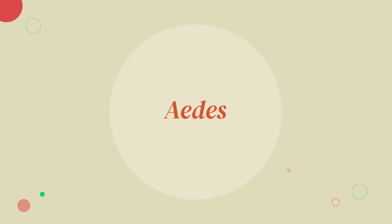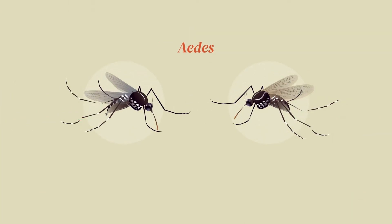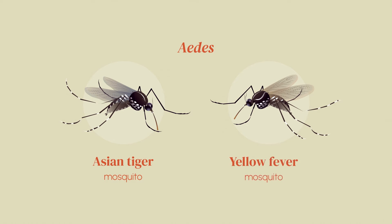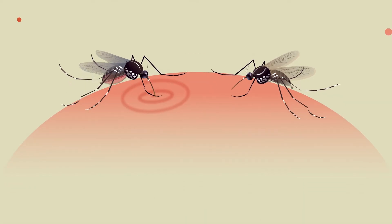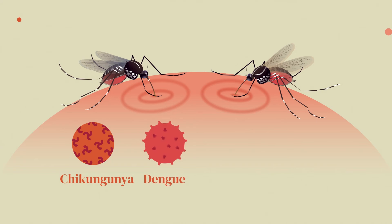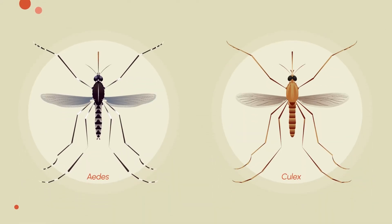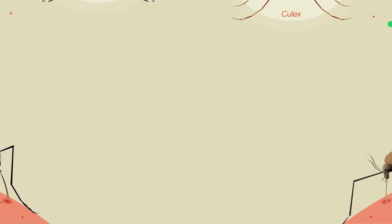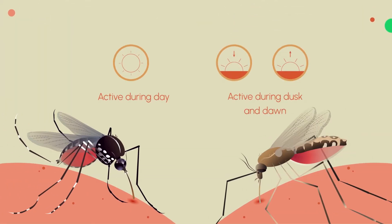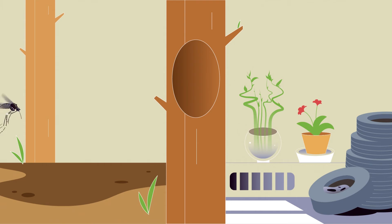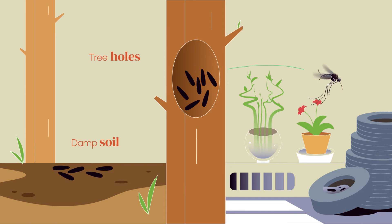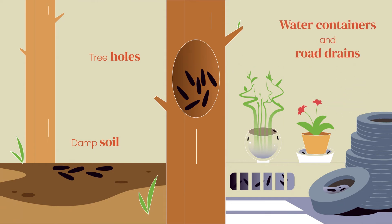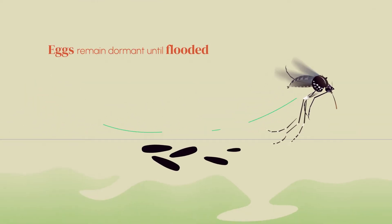Aedes. Various Aedes species are dangerous invasive species, like the Asian tiger mosquito and the yellow fever mosquito. These species can spread human arboviruses such as chikungunya, dengue, yellow fever, and Zika. Mosquitoes from the genus Aedes usually have darker colours than Culex, and they are active mostly during the day and during dusk and dawn. They lay their eggs in unique habitats such as on damp soil, tree holes, and the inner walls of different types of containers that collect water, including road drains. Their eggs remain dormant until flooded.